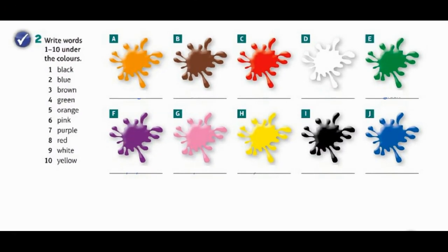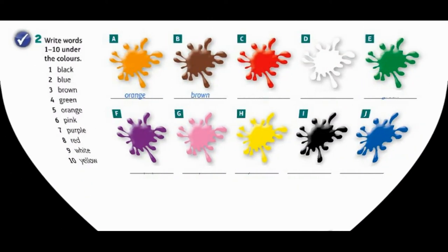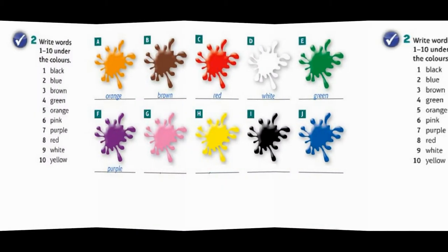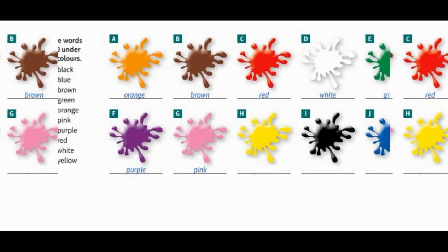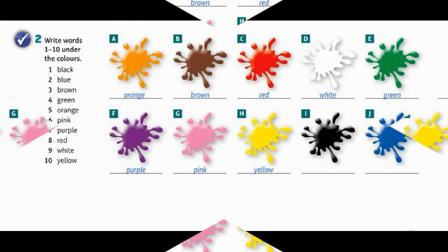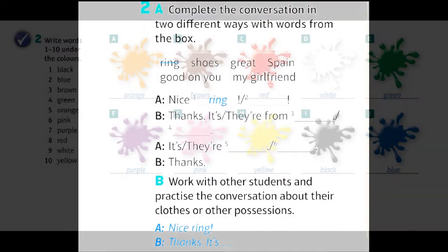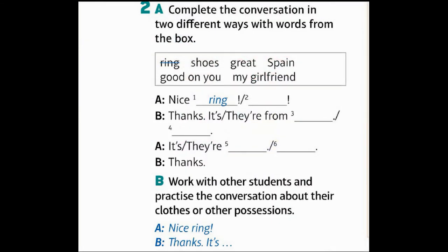Write the correct words 1-10 under the colors: orange, brown, red, white, green, purple, pink, yellow, blue, black. Complete the conversation in two different ways with words from the box.